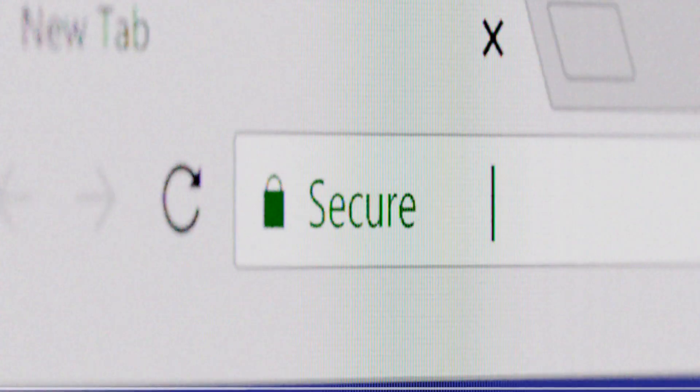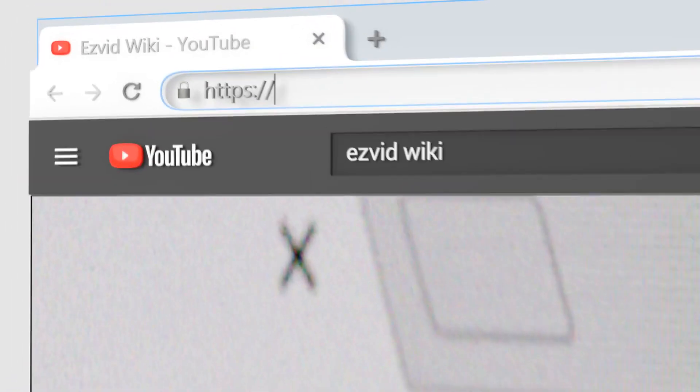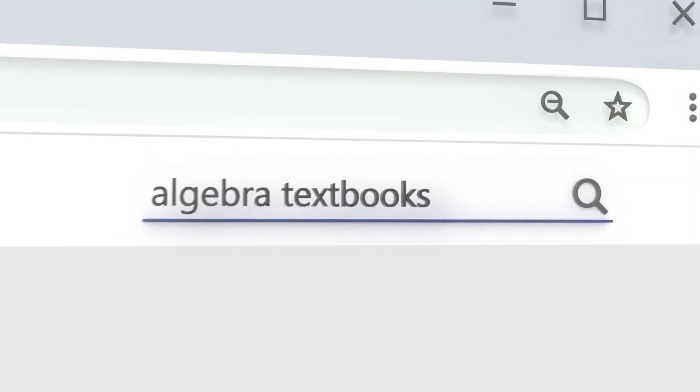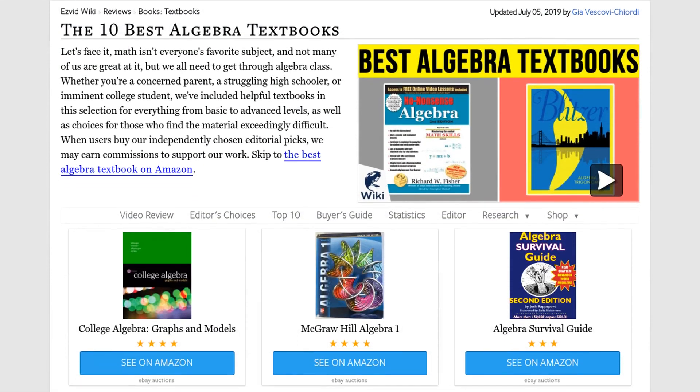Our newest choices can only be seen at wiki.easyvid.com. Go there now and search for algebra textbooks or simply click beneath this video.